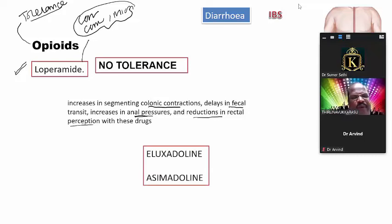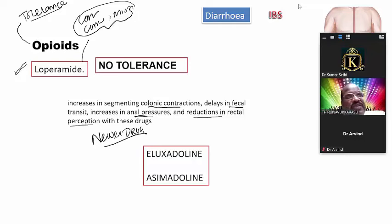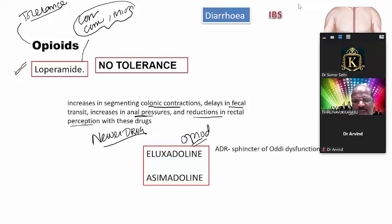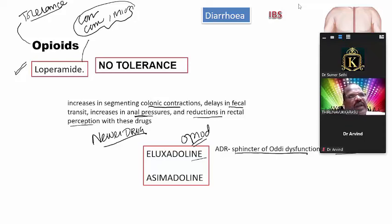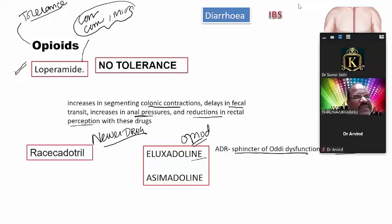Newer opioid drugs include eluxadoline and asimadoline. These also work for diarrhea-dominant IBS, but importantly they can cause sphincter of Oddi dysfunction and rarely pancreatitis. There is also racecadotril, an enkephalinase inhibitor that accumulates enkephalin and is useful for controlling diarrhea.